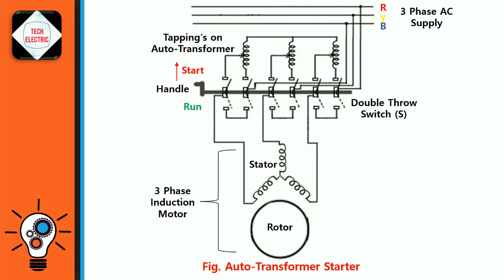Initially, the Auto Transformer Starter connects the motor to the Auto Transformer's secondary tapping point, which provides a reduced voltage. This reduces the initial current surge and helps the motor start smoothly. As the motor gains speed and stability, the Auto Transformer Starter gradually switches the connection to the primary tapping point, providing a higher voltage for the motor's continuous operation.